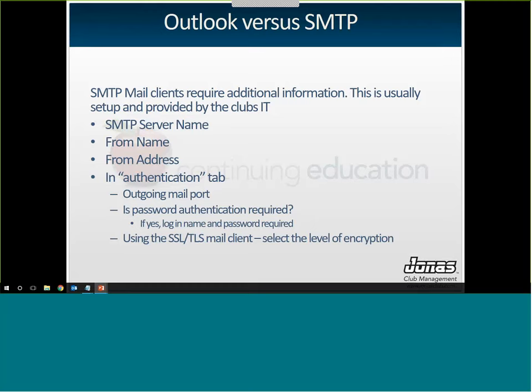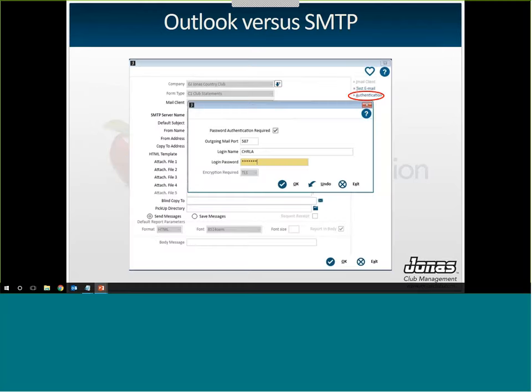If you're using the SSL/TLS mail client, you need to select the level of encryption. For example, if setting it up for club statements, click on Authentication, check off that password authentication is required, set your outgoing mail port — in this case 587 — and enter your login name and password. In this example, we are not using SSL/TLS, so the encryption required field is grayed out.